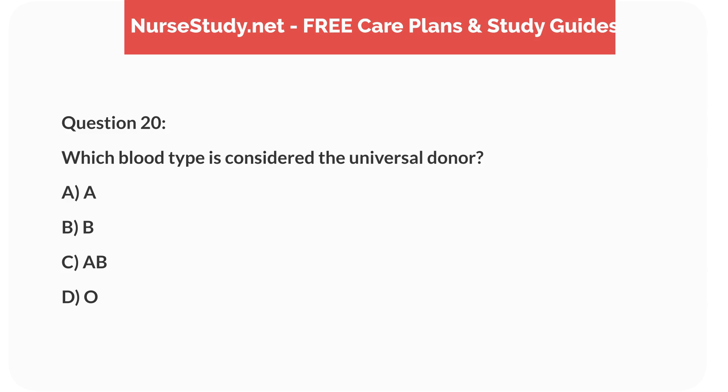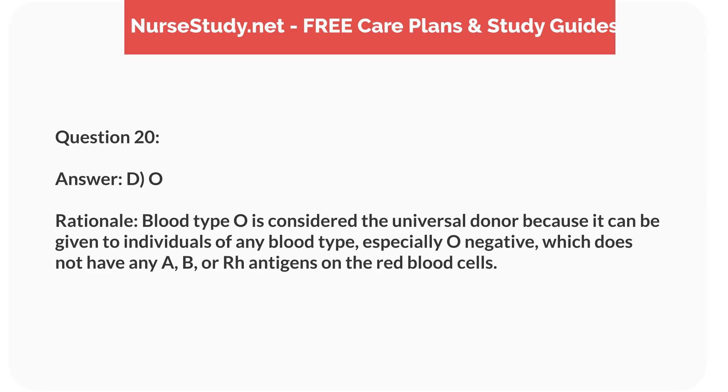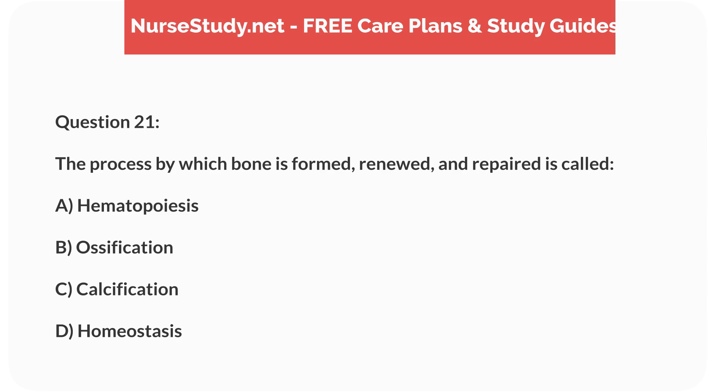Question 20: Which blood type is considered the universal donor? A) A, B) B, C) A and B, D) O. Answer: D, O. Rationale: Blood type O is considered the universal donor because it can be given to individuals of any blood type. Specifically, O- does not have any A, B, or Rh antigens on the red blood cells.